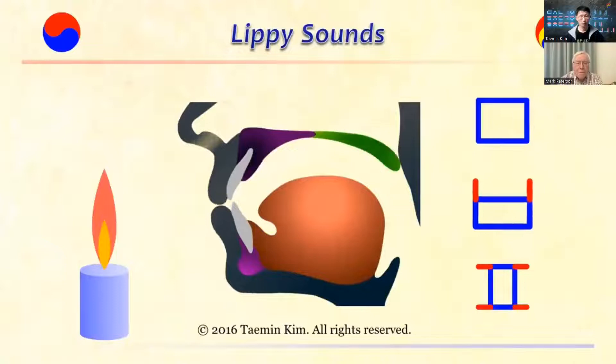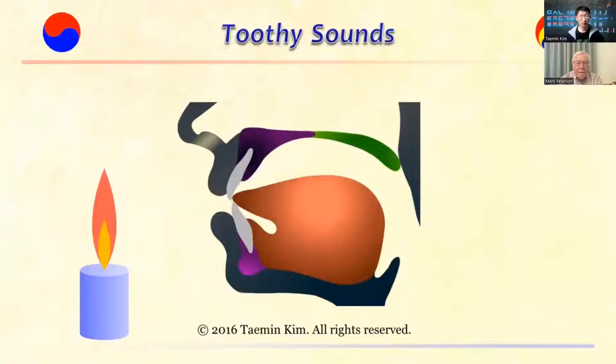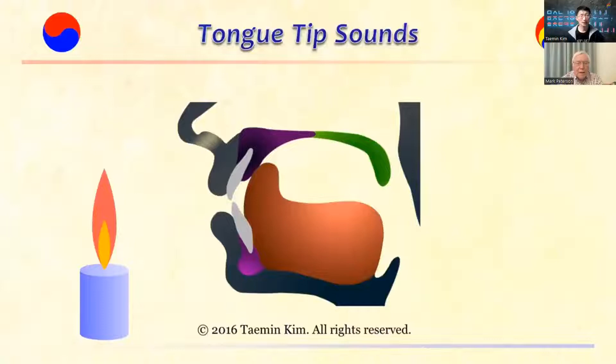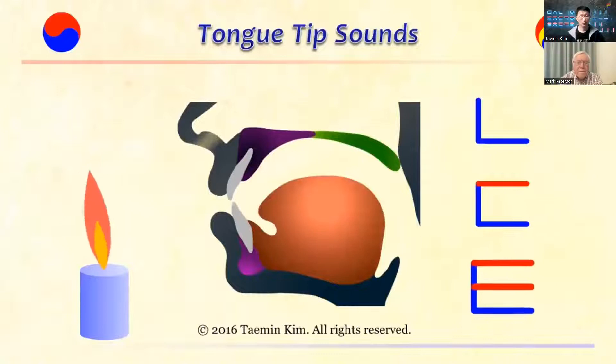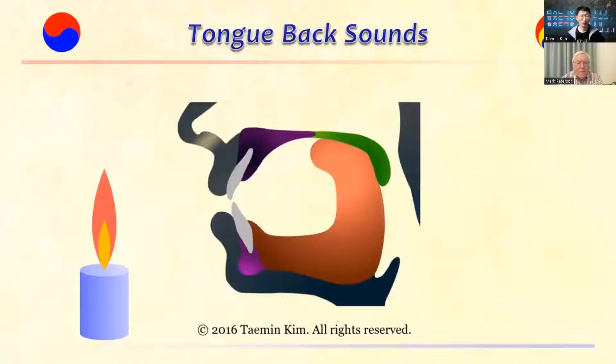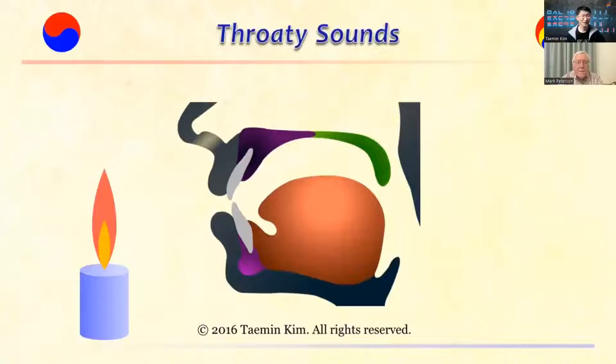The teeth can open the oral tract with the tongue tip and produce 3 teeth sounds — S, J, CH. A triangle outlines the sharp teeth. The tongue tip produces 3 tongue-tip sounds: N, D, T. The L-shape outlines the erect tongue tip. The tongue back produces 3 tongue-back sounds: NG, G, K. The vertical line outlines the tongue back raised. The throat produces 3 throaty sounds — the circle outlines the round throat — and those sounds are the vowel initiator, the E, and H.